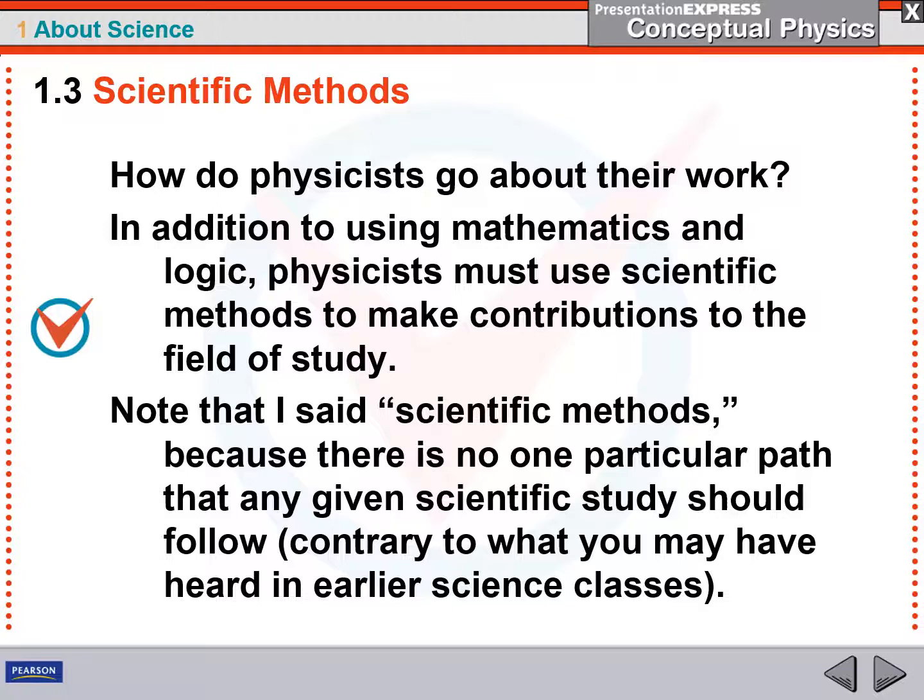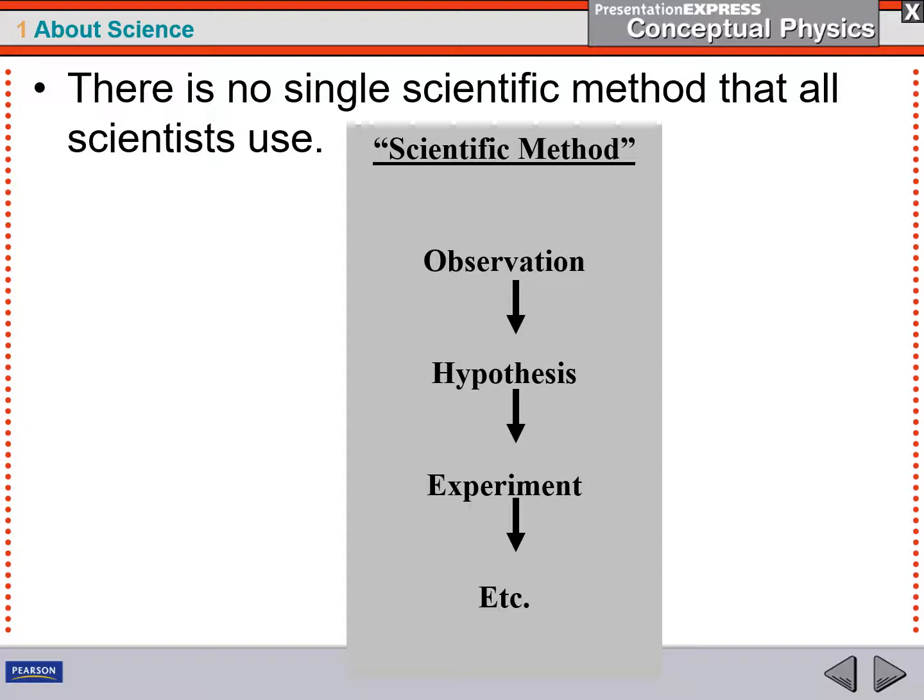There is no one particular path that any given scientific study has to follow, contrary to what you may have learned in earlier science classes. For example, in ninth grade, you may have been given a scientific method, and it may have had a certain number of steps. Observation leads to a hypothesis, which leads to an experiment, etc.